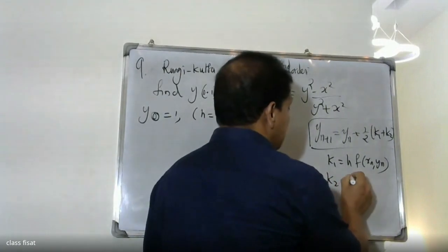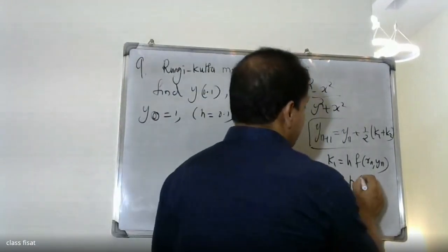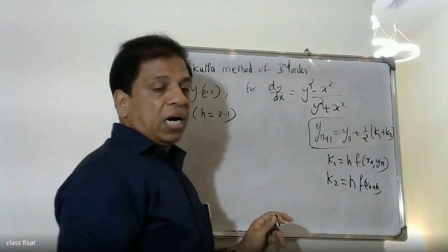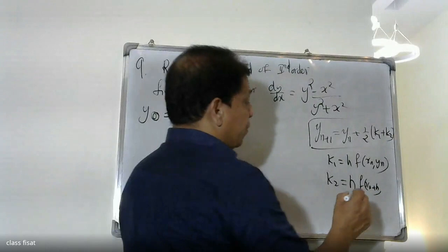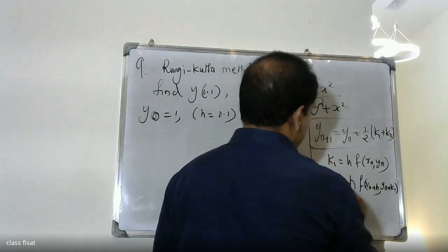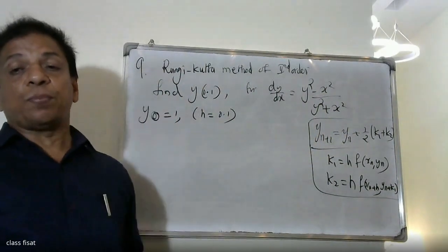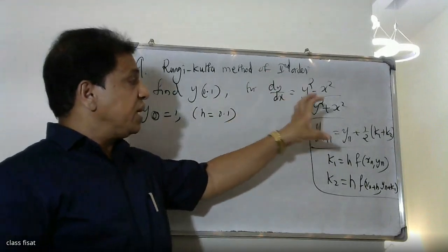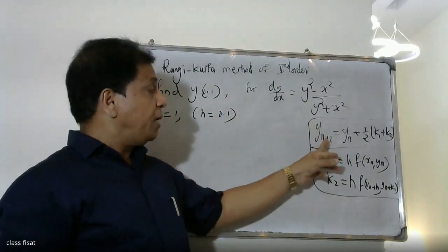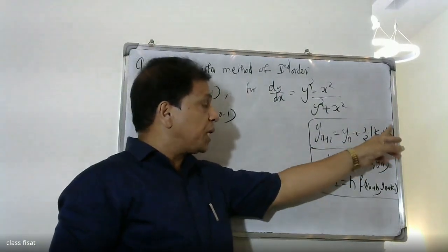Where k2 is equal to h times f of (x_n plus h, y_n plus k1), and k1 is equal to h times f of (x_n, y_n). That is the formula for Runge-Kutta second order. First we write the formula: y_{n+1} is equal to y_n plus one-half into (k1 plus k2).